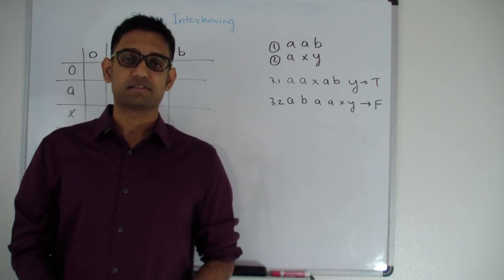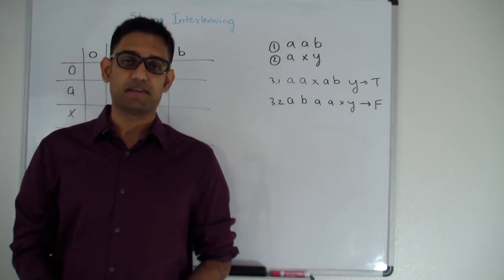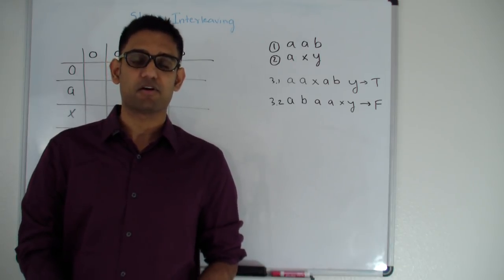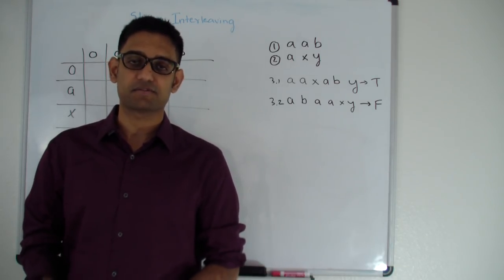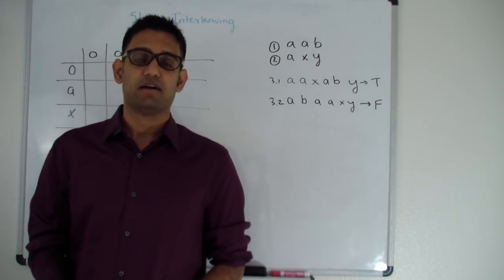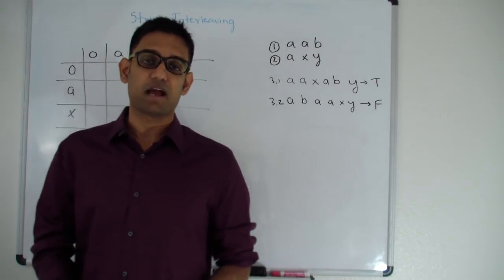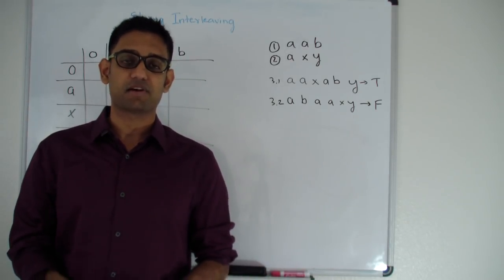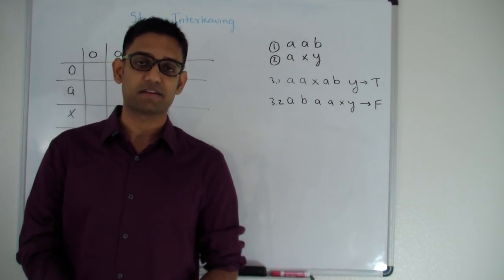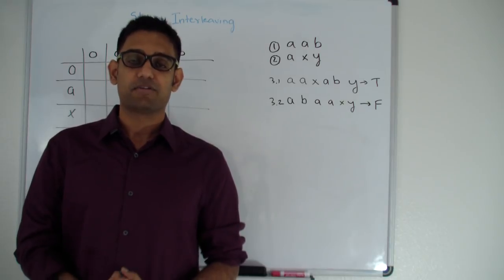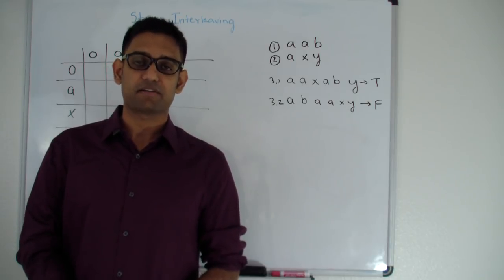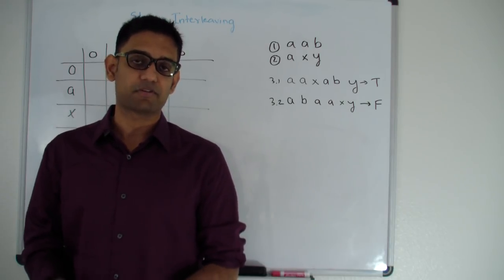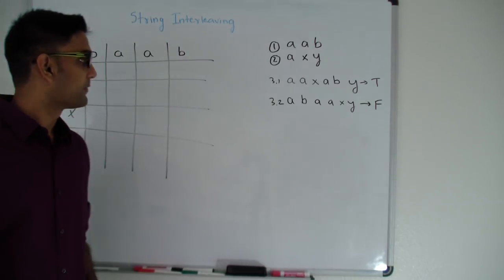The question is: given three strings, you have to tell if the third string is an interleaving of the first and second string or not. By interleaving, I mean that the third string should be entirely made up of characters in the first and second string, and the order in which characters appear in the first and second string should be preserved.